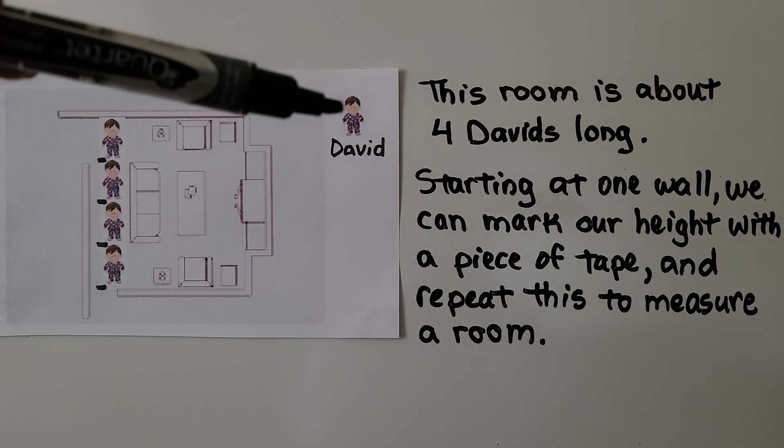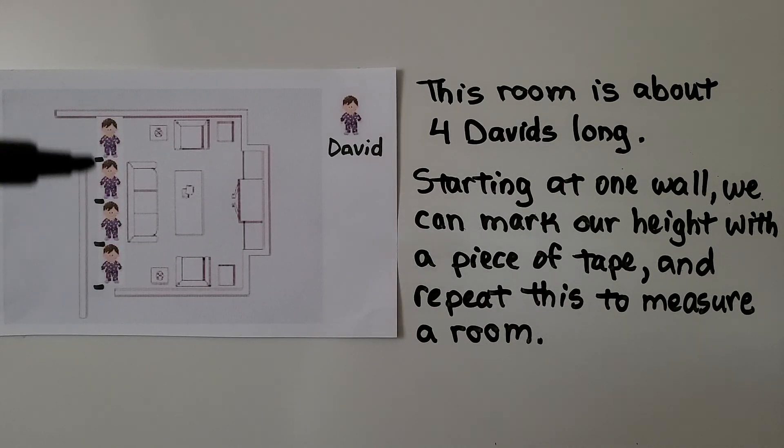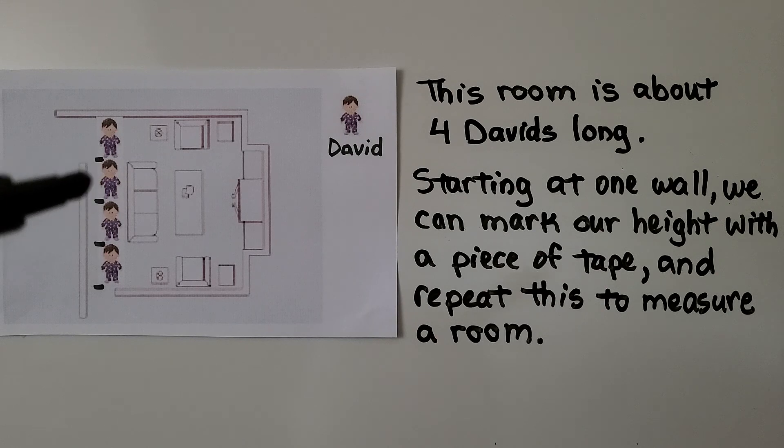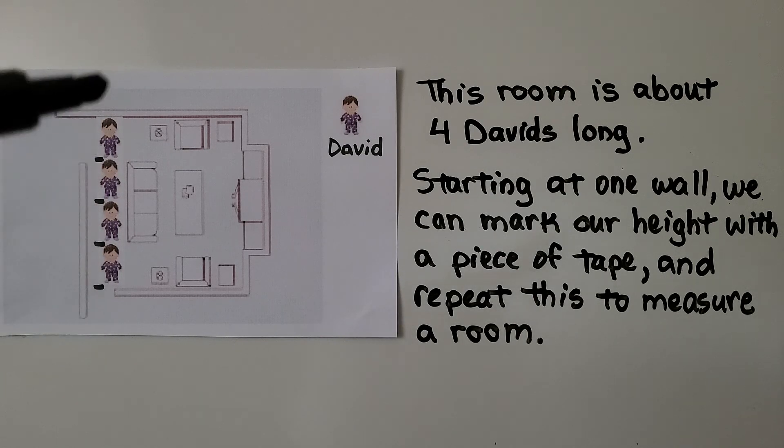Here's David. This room is about four Davids long, so David would be our non-standard measuring unit. Starting at one wall, we can mark our height with a piece of tape at our feet and repeat this to measure the room. We'll know how many of our body lengths it would take to measure the room.